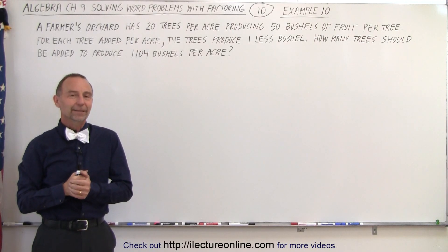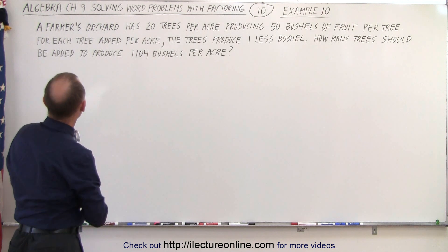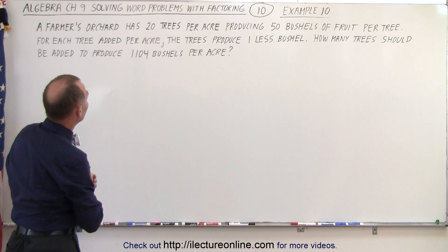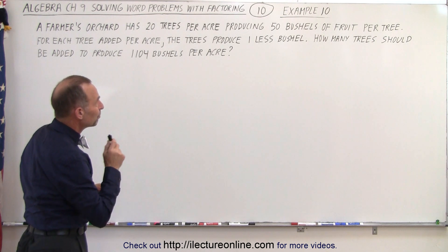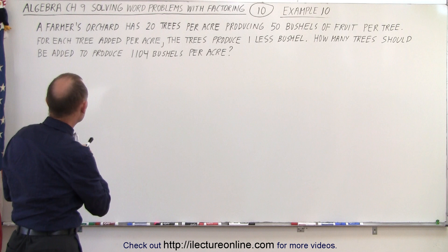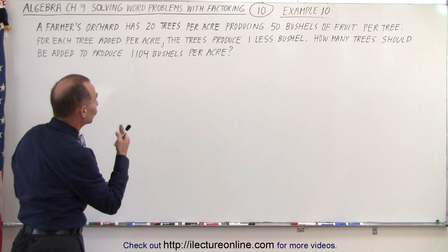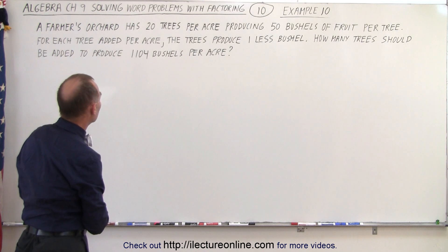Welcome to our lecture online. Our next problem is kind of an interesting problem. Let's read it together. We have a farmer's orchard that has 20 trees per acre, and they produce 50 bushels of fruit per tree. Now the question is, for each tree added per acre, the trees produce one less bushel. How many trees should be added to produce 1,104 bushels per acre?